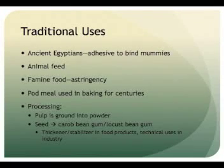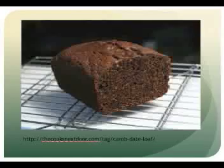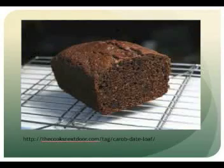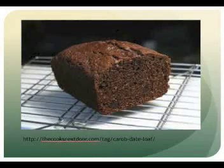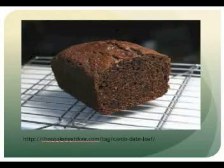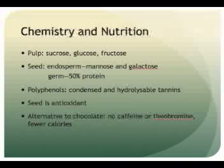The powder from the pulp has been used in baking for centuries. The carob bean gum is also used in foods as a gelling agent and in industry as an adhesive, among other things.